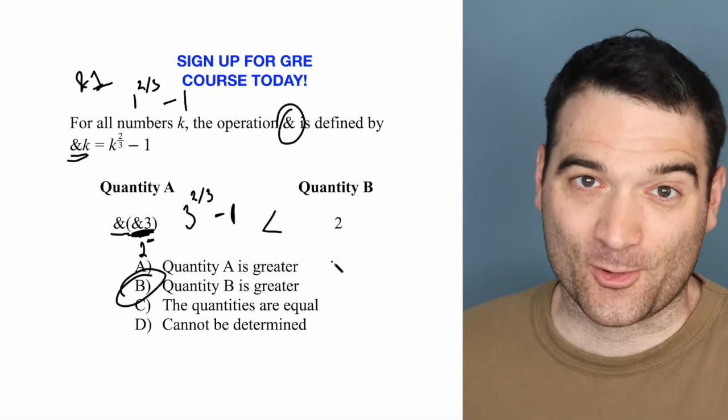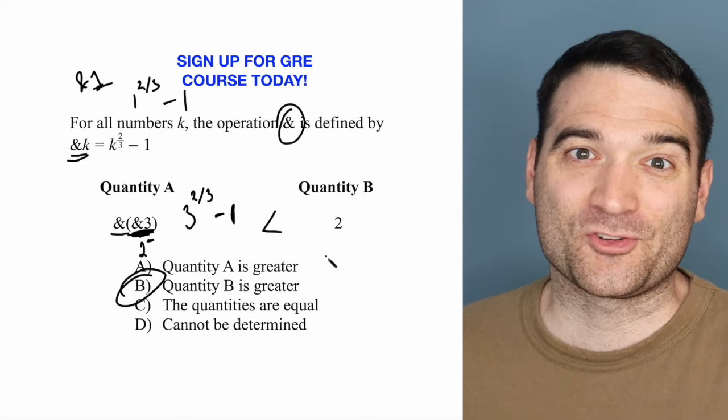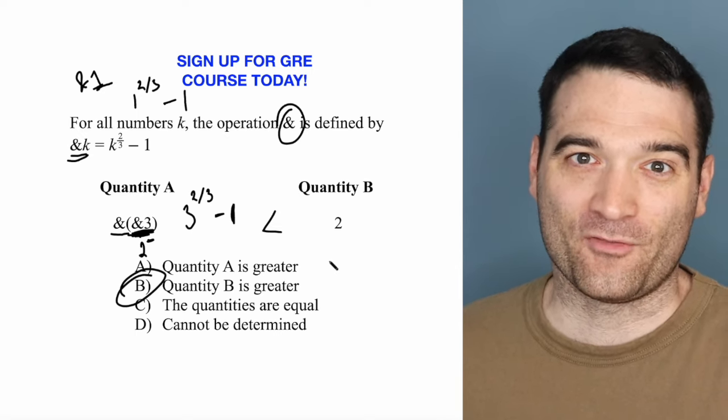In this case, quantity B is the correct answer. For more GRE tips and tricks or to sign up for my online course, follow the link on my profile. We'll see you next time.